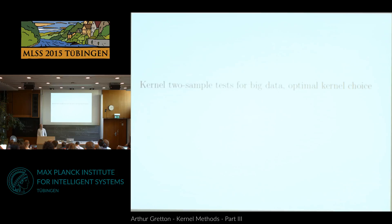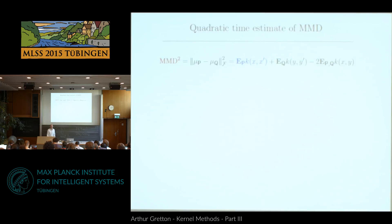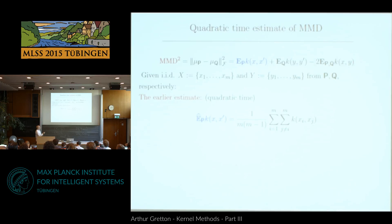This next part combines how to choose the kernel with testing on big data, because it's mathematically convenient to explain kernel choice when you have a lot of data. Here is my maximum mean discrepancy: it's the average similarity between samples from P, plus those from Q, minus the average similarity between samples from P and Q. To compute the expectation of K(x, x'), I need X' distributed according to P but independent of X.